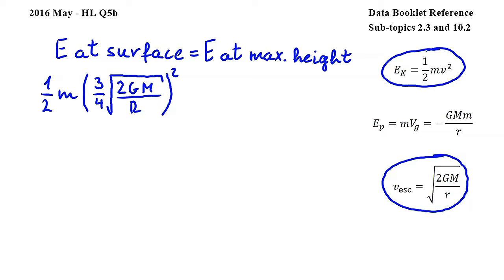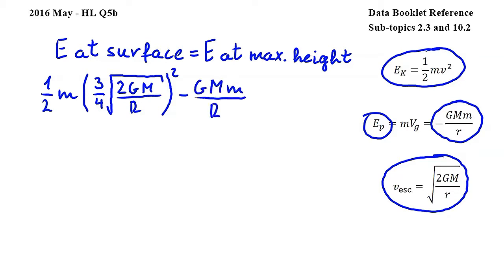The gravitational potential energy of the probe at the surface can be expressed by using this equation from subtopic 10.2, where EP is gravitational potential energy, G is the gravitational constant, capital M is the mass of the planet, lowercase m is the mass of the probe, and R is the distance between the probe and the center of the planet. Adding the gravitational potential energy to the kinetic energy, we get minus GMm over capital R, because the distance between the probe and the center of the planet when the probe is at the surface is equal to the radius of the planet.